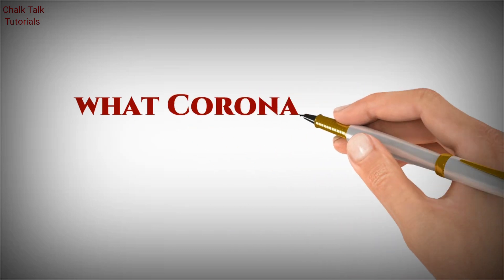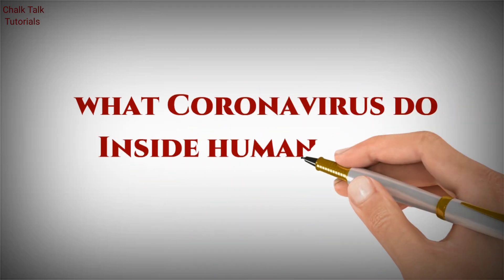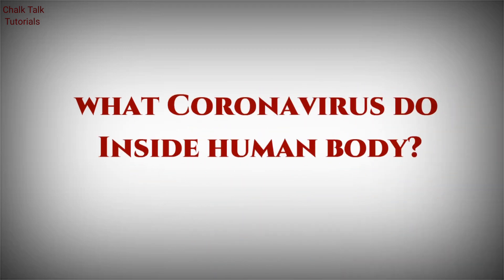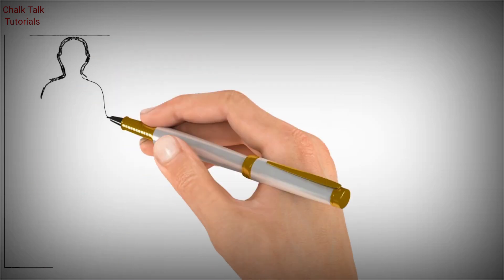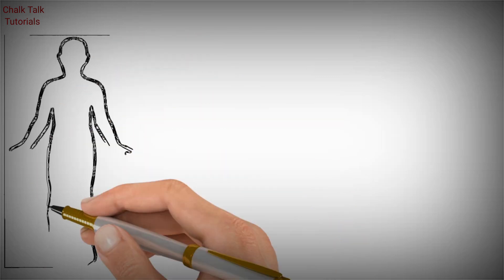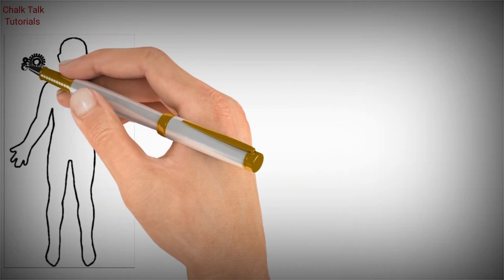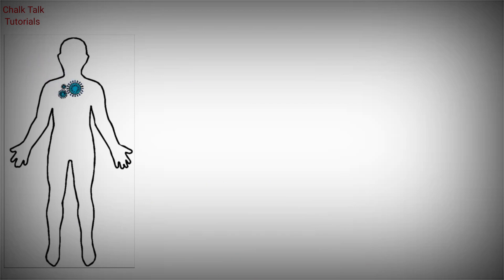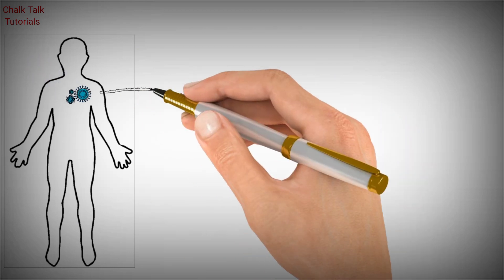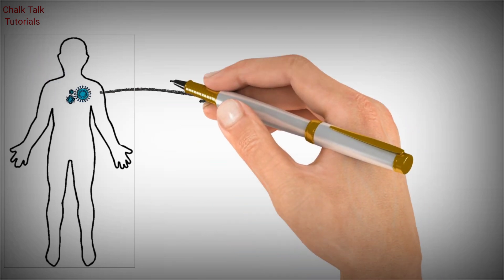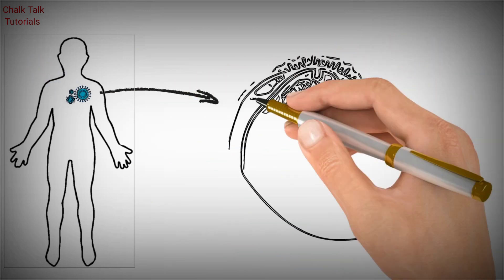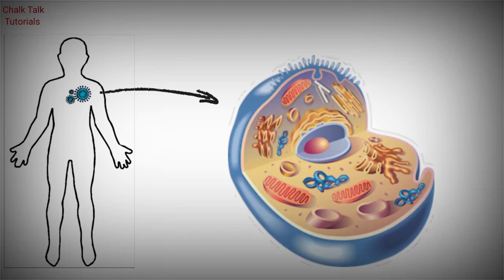The biggest question is: what does coronavirus do inside the human body? First, coronavirus enters the human body and attaches to human cells through cell receptors which are present on human cells, through spike proteins as mentioned earlier. This process is known as adsorption.